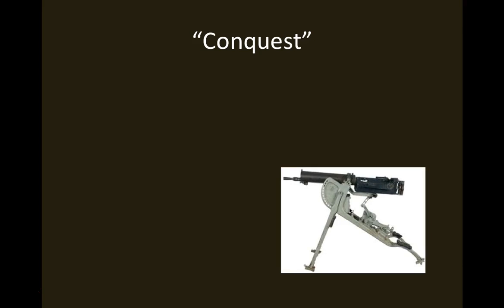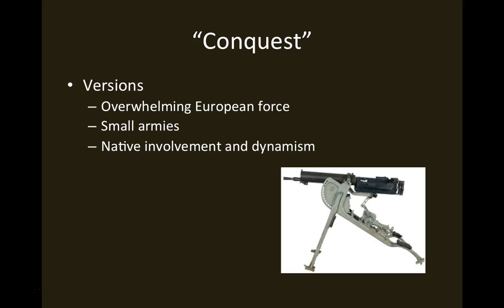There is the Maxim gun — a photograph of it from the late 19th century. This gun, developed by Hiram Maxim, was the first truly automatic weapon with a rapid fire mechanism. The gun could get very hot, but it may have represented the greatest technological gap between Europeans and Africans that existed at this time.